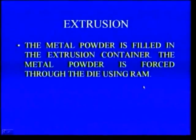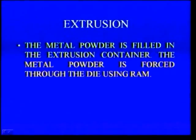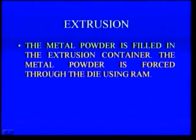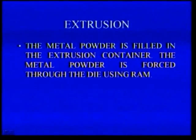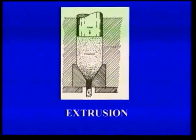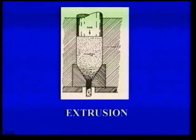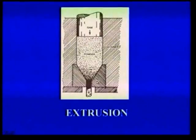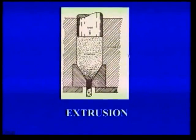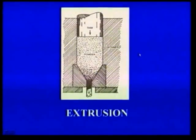Another compacting method is extrusion. In the extrusion method, the metal powder is filled in the extrusion container. Then the metal powder is forced to the die using a ram. The container is filled with metal powder, pressed by using the top ram, and the required shape comes out from the die. This method is called extrusion.